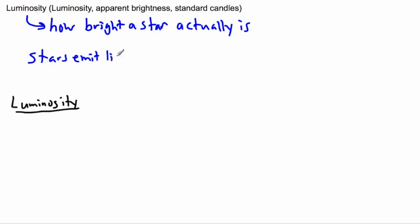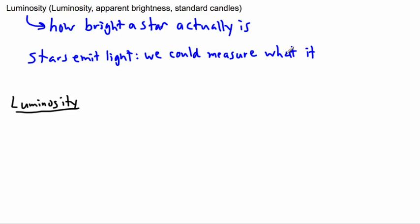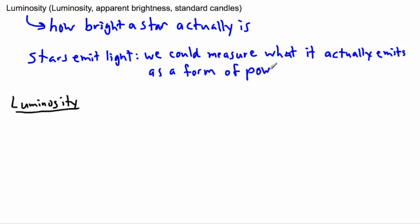Because stars emit light, that means we could actually measure it. So if we measure what it actually emits — in other words, what it puts out — if we measure light, then we could do that as a form of power. The stars emit light, they give off light, and we could measure that light because we could actually do that here on Earth. We could measure what the star actually emits, and that's as a form of power.